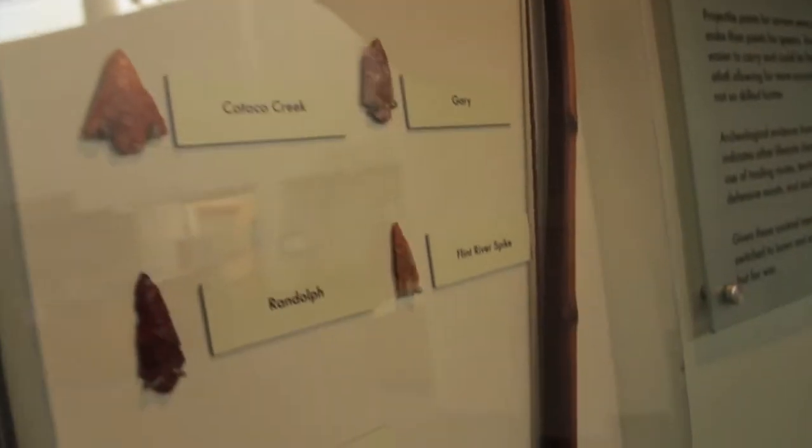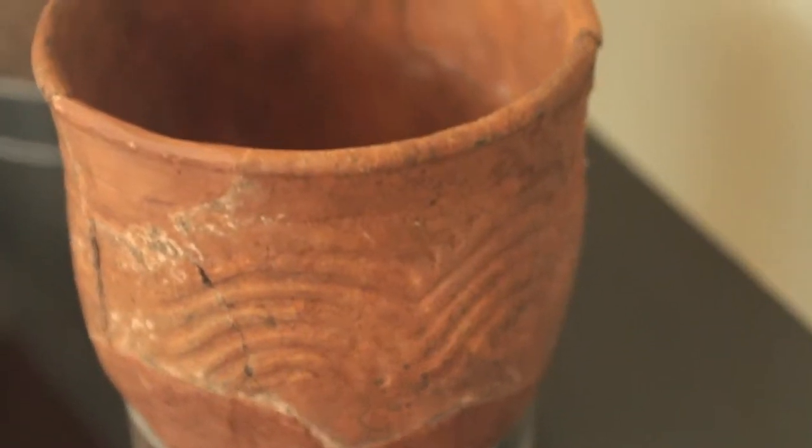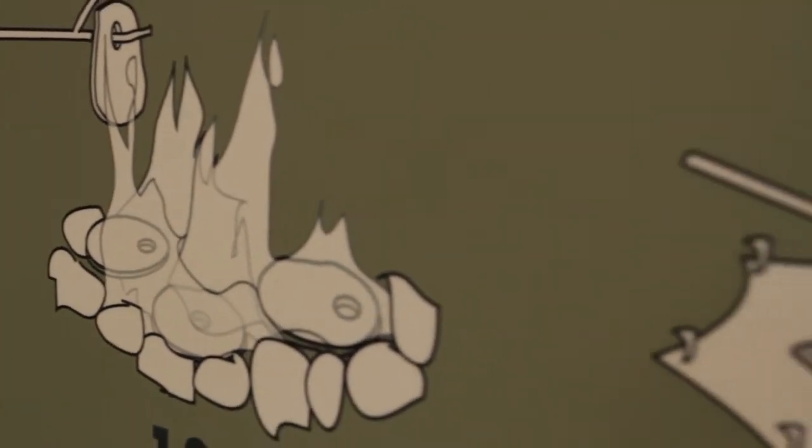But the most important thing of this time period was the invention of pottery. Because prior to the invention of pottery, the way you cooked your food was you dug a hole in the ground, you laid an animal skin in the hole, you put your food and water on the animal skin and you took rocks and you put them in the fire to heat them up.